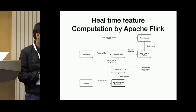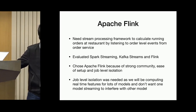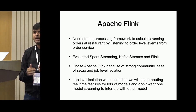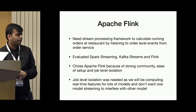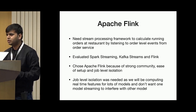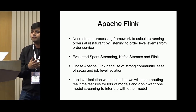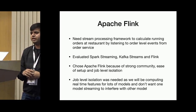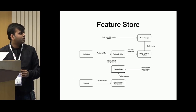For real-time feature computation, we evaluated a lot of streaming platforms and finally chose Apache Flink. We evaluated Spark Streaming, Kafka Streams, and Apache Flink. The main reason for choosing Apache Flink is its very strong community, ease of setup, and job-level isolation. In production we will be running hundreds of models with tens of jobs each, so I need job-level isolation — if the kitchen preparation time job fails, the rider assignment job should not be affected.